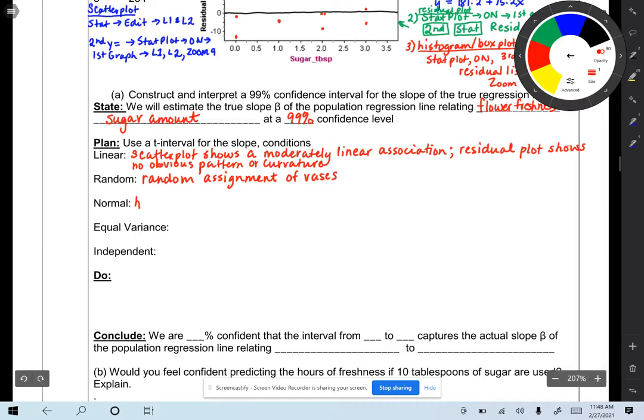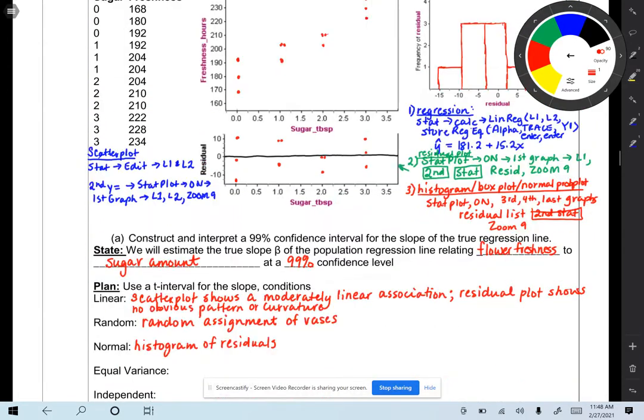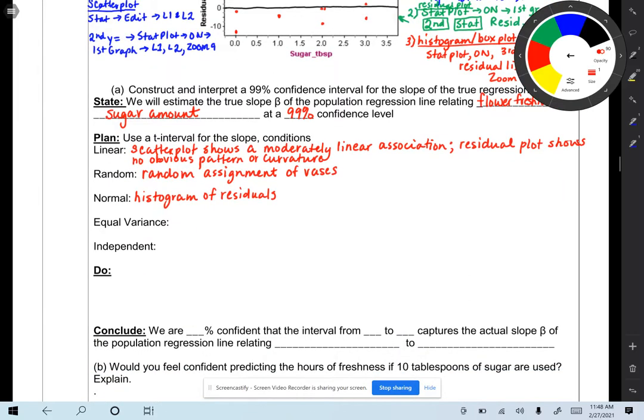normal condition, the histogram, because that's what I ended up drawing up there, of the residual. And honestly, you can draw the normal probability plot and then talk about it instead. I just drew the histogram.